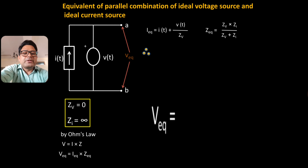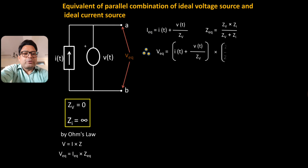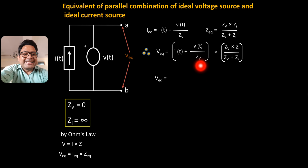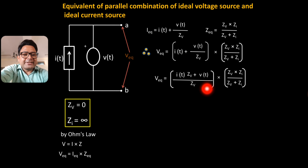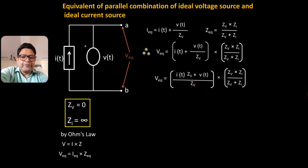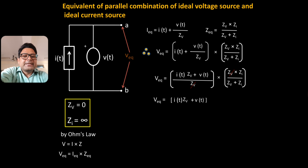Now we can find VEQ. VEQ = IEQ × ZEQ. Substituting the values and taking LCM as ZV for IEQ, we get: IEQ = (I(T) × ZV + V(T)) / ZV. Multiplying by ZEQ = (ZV × ZI) / (ZV + ZI), the ZV terms cancel, giving: VEQ = (I(T) × ZV + V(T) × ZI) / (ZV + ZI).